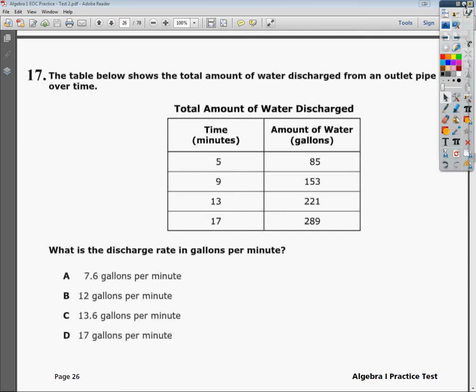And the question says, what is the discharge rate in gallons per minute? Now I can assume that the relationship is linear, which means that the difference between each section would be the same. But I don't know for sure, so I'm going to have to test.